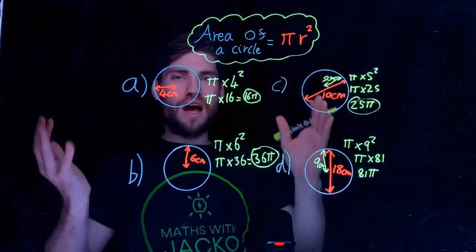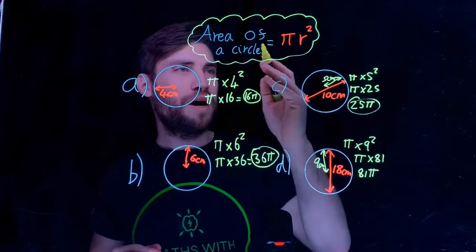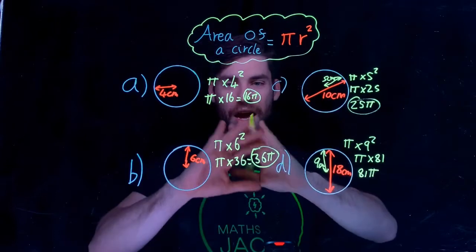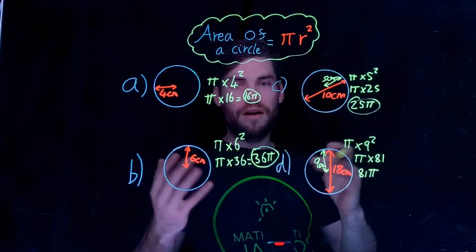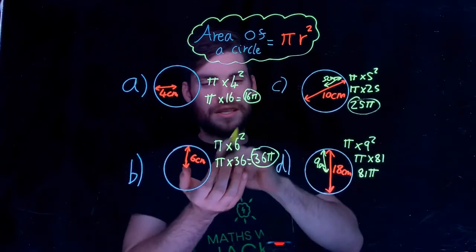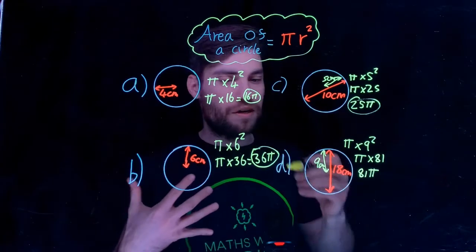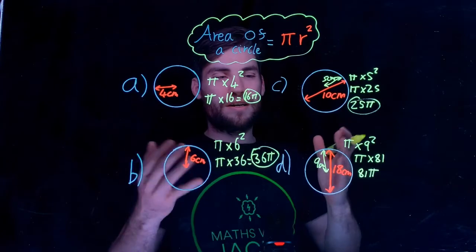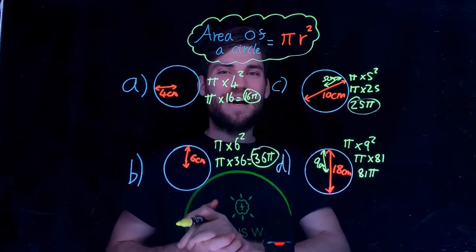And that is area of a circle using the formula πr². R stands for radius—π times the radius squared. Our answers are in terms of π. Remember, if you want the full answer, just press 16π in your calculator or 36π and you'll get the full answer. That's Maths with Jacko—area of a circle. Take care and I'll see you next time.